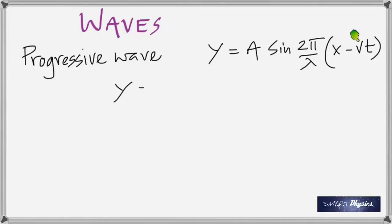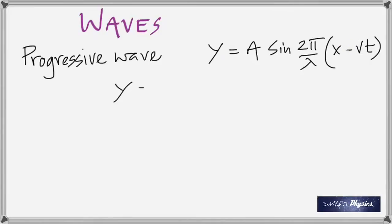We use v for the velocity of the wave. Can you tell if this wave is propagating along the positive or negative x-axis? Positive — because if it were going in the opposite direction, that minus sign would turn into a plus. That's one form. The second way to write the progressive wave equation is A sine(kx − ωt).